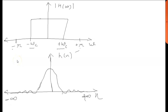Hello everyone. You will see the design of a FIR filter using the windowing method. Let's take an example of a low pass filter. A low pass filter is represented like this in the frequency domain. Its equivalent in the time domain is like this.